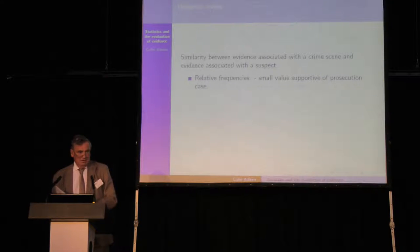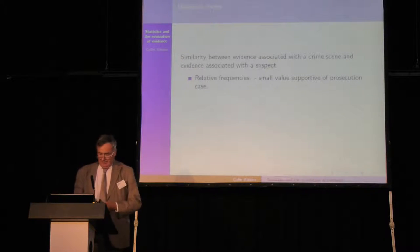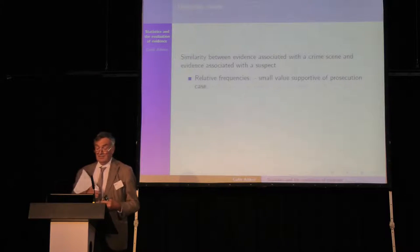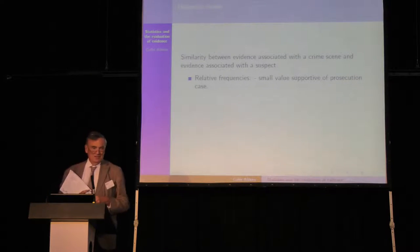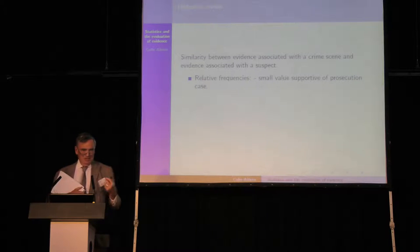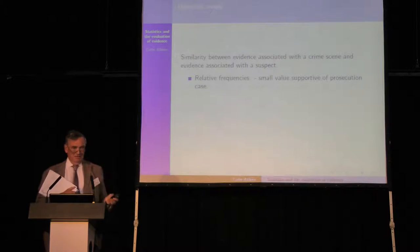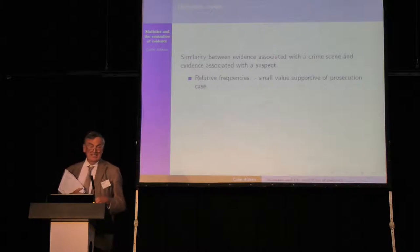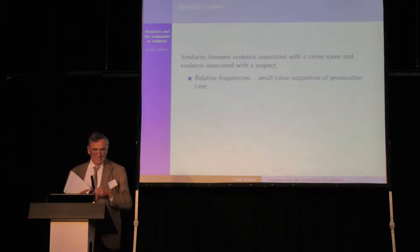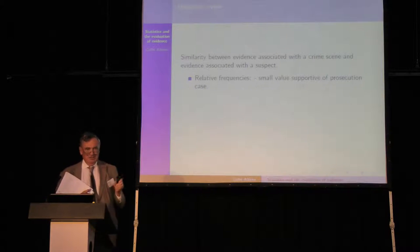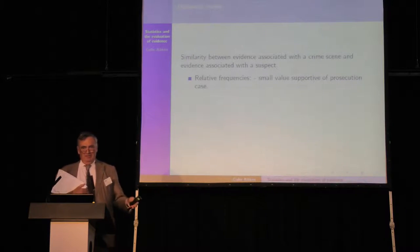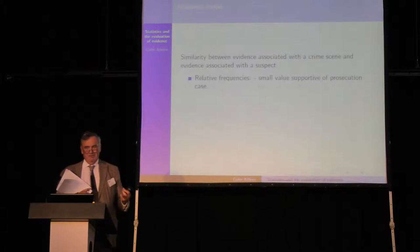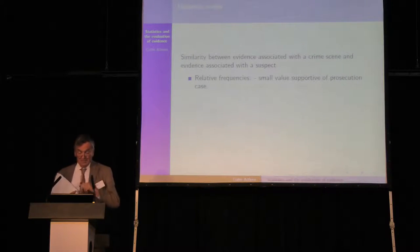There were various ways of looking at this historically. To look at relative frequencies — the idea was that if something was rare in some background population of innocent people and you found it associated with a suspect and associated with a crime, it supported the prosecution's case. It gets a bit more sophisticated in things like DNA profiles, which may be supportive of the fact that the suspect's DNA was at the crime scene, but then you have to do an awful lot more beyond that.